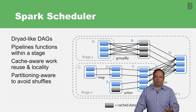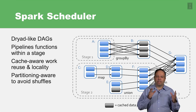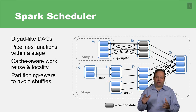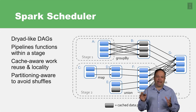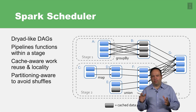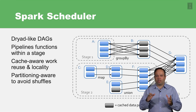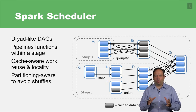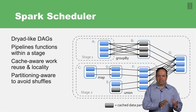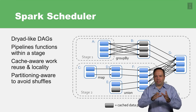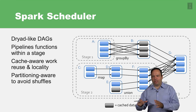The scheduler module can try to identify stages within the computation. Each stage is a set of transformations followed by one last action. That's why I talked about lazy evaluation of transformations — because a couple of transformations together plus one action become one stage, and then the scheduler schedules one stage after another.